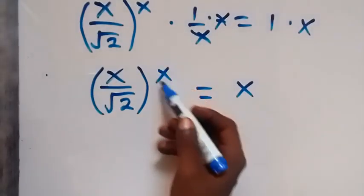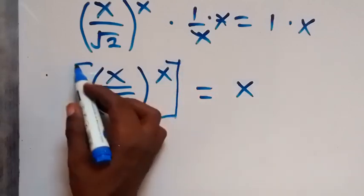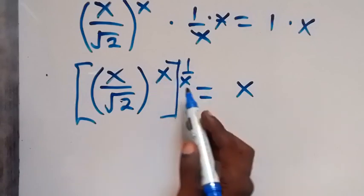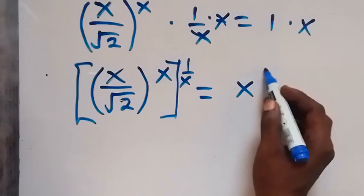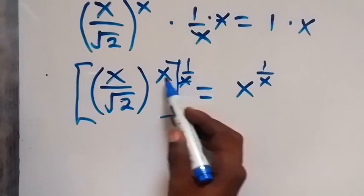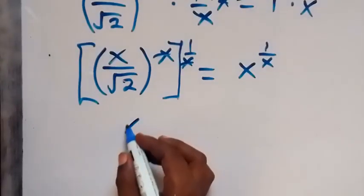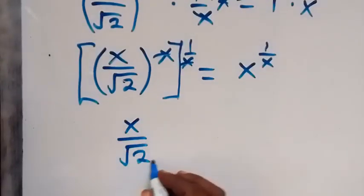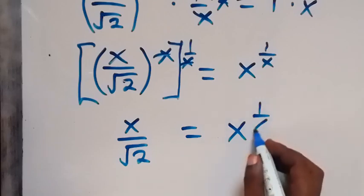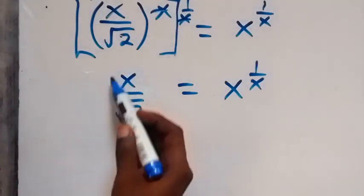Next, let's get rid of the power of x by multiplying both exponents by 1 over x. Since the power x multiplied by 1 over x cancels, we are left with x over root 2, which now equals x raised to power 1 over x.